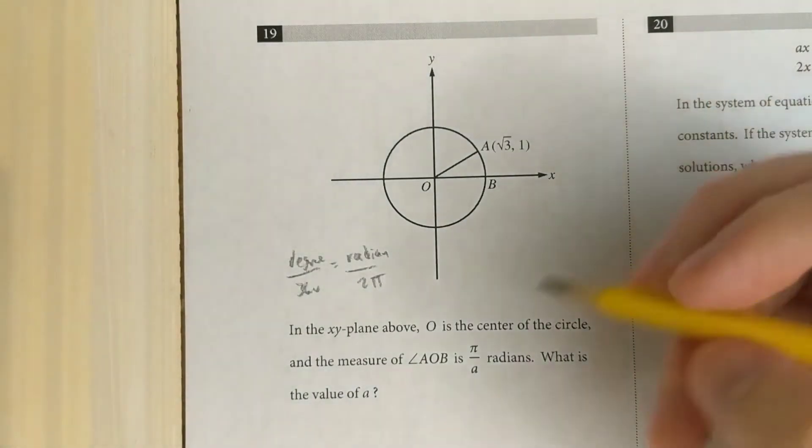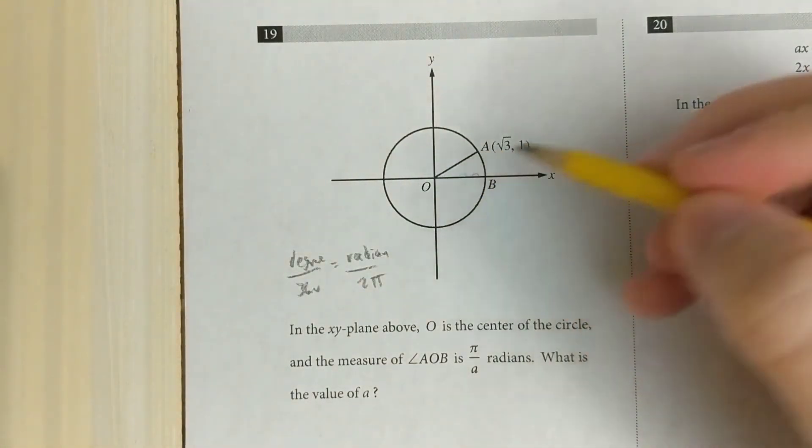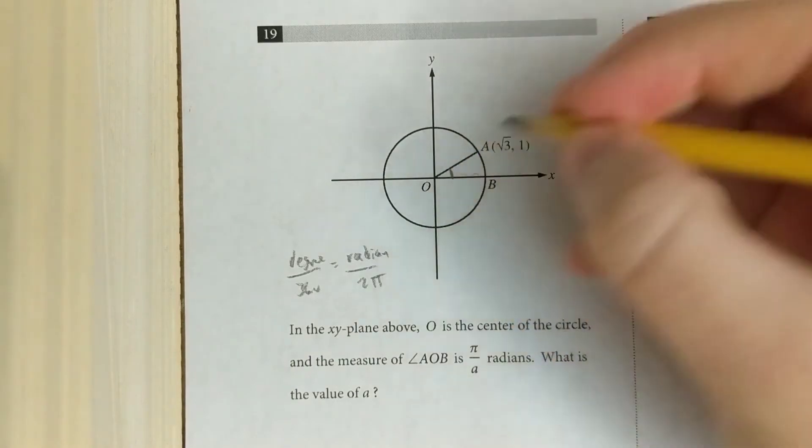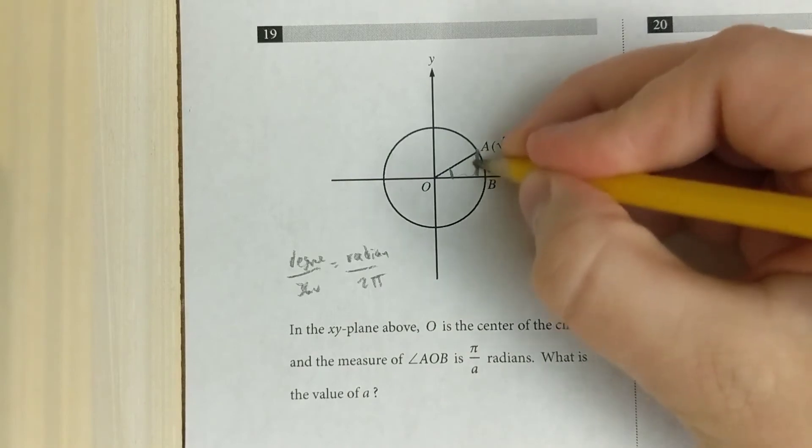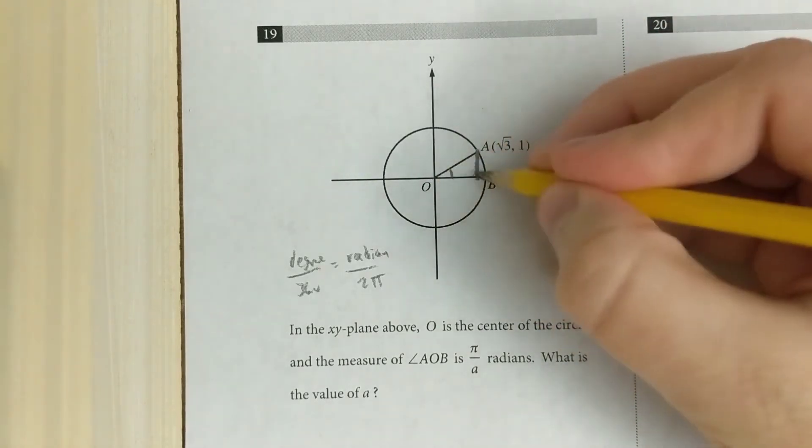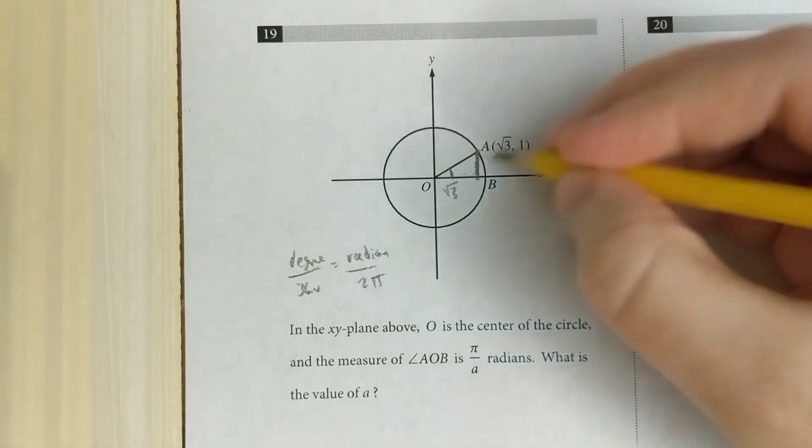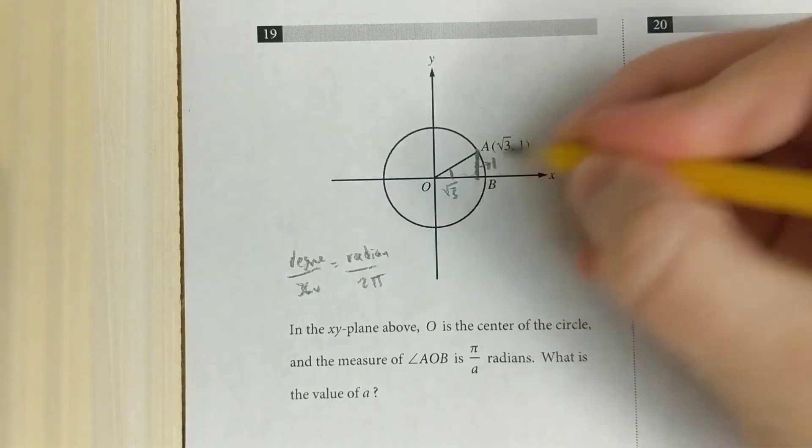This question is asking for the measure of angle AOB, but in radians. And it tells us that point A is at root 3, 1. So I'm going to make a right triangle. I know this is going from 0 over to root 3, so that's root 3. This is going from 0 up to 1, so that's 1.